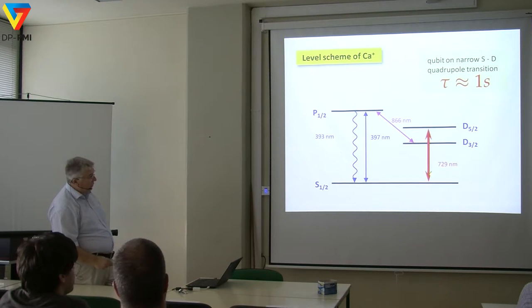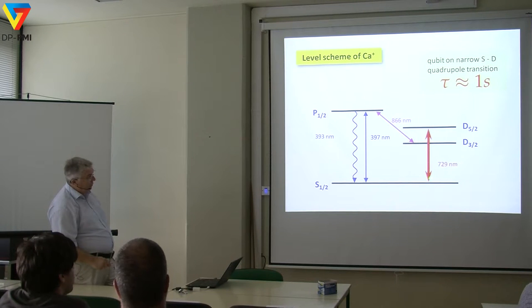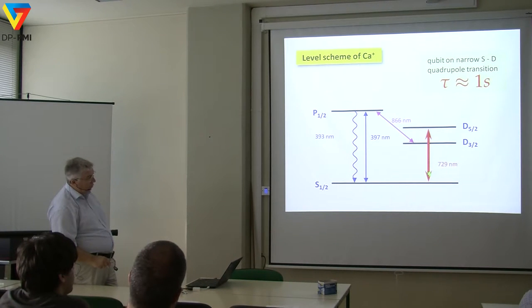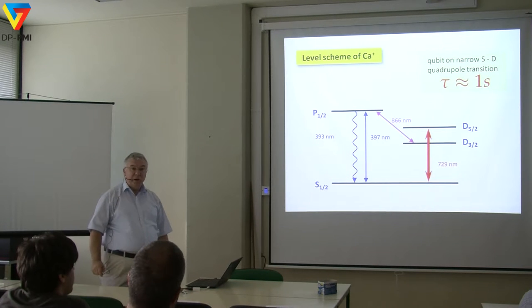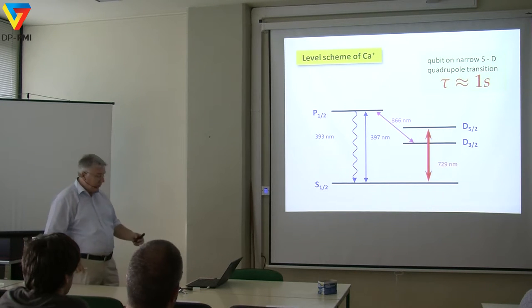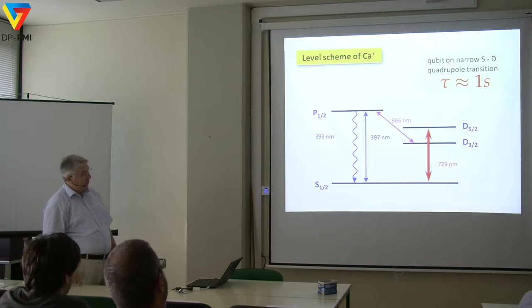The transition from the ground state to the excited state is a quadrupole transition — not allowed in first-order dipole approximation — which means its lifetime is long, about one second. To make use of this we need a laser with a bandwidth of one hertz, which is the hard part. We have several lasers now that do the trick, and we can come back to the technicalities later.